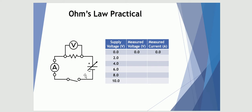A circuit is constructed as such — we have a variable power supply, shown as a battery symbol with a line through it, similar to ones in school with a dial from 2, 4, 6, 8, and 10 volts — in series with an unknown resistor, in series with an ammeter and a switch. The voltmeter is connected in parallel across the unknown resistor.